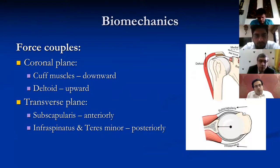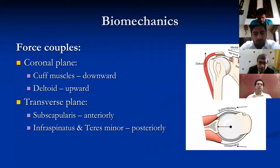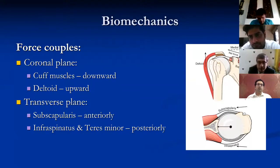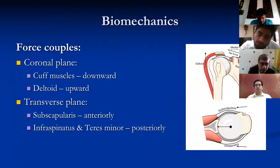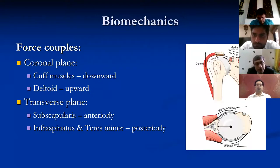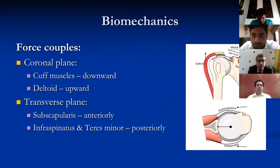There are two force couples you should know. On the coronal plane, the cuff muscles overall tend to pull the humeral head downwards as depressors, while the deltoid tries to pull the humeral head upwards as an elevator. In the transverse plane, you have the subscapularis anteriorly and the infraspinatus posteriorly — this transverse plane force couple is also a very important factor to consider. Various classifications of cuff tears exist.